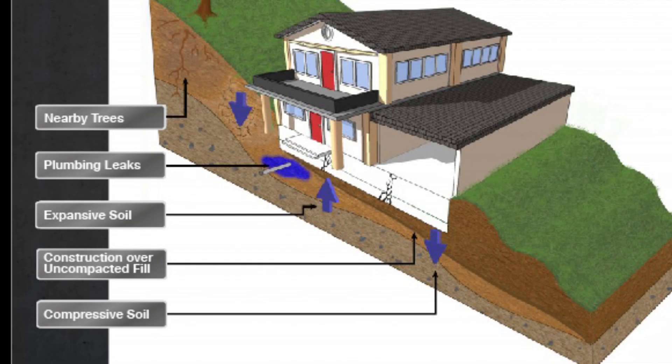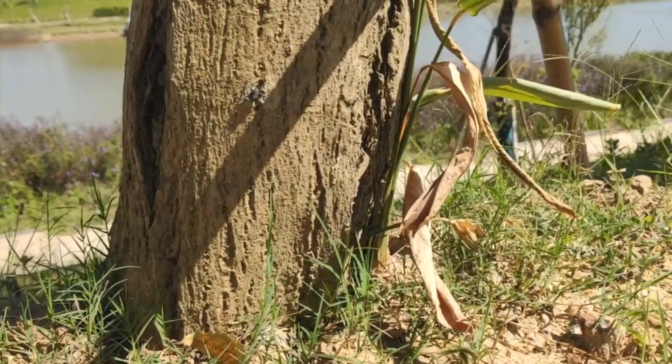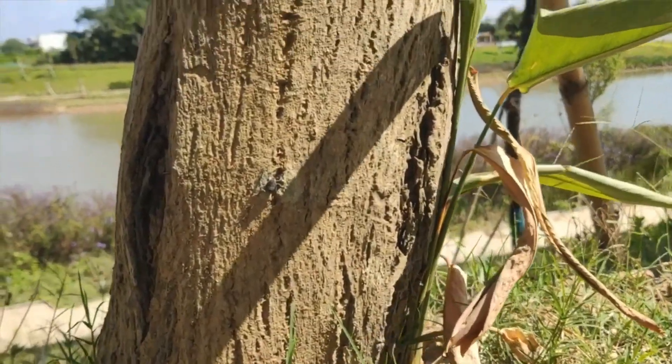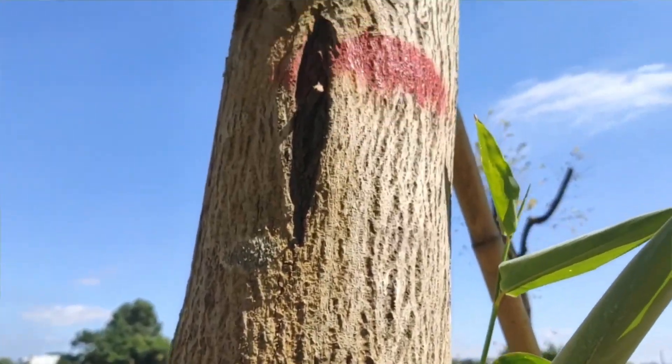Settling Concrete Cracks. On the other hand, ground settling below a concrete slab can also cause cracking. Settling cracks typically occur in situations where a void is created in the ground below the concrete surface — for example, when a large tree is removed and the roots begin to decompose, or when a utility company digs a trench for their lines and pipes and doesn't compact the soil when they refill it.